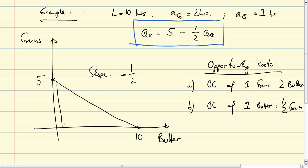You have to give up 5 guns to gain the 10 barrels of butter, and that's the slope. You can see how the slope, as drawn, indicates the opportunity cost of butter in terms of guns. And principally, that's it.